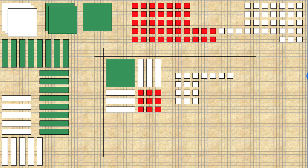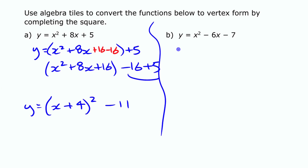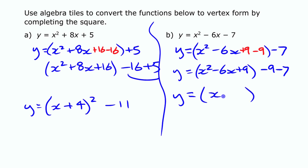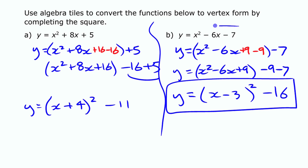Going back to write that down: we had x squared minus 6x and minus 7. We grouped the quadratic and linear terms, added 9 and minus 9. The first three parts — x squared, minus 6x, plus 9 — became our square, and the minus 9 and minus 7 were the extras. So this became x minus 3 squared minus 16, which is the equivalent vertex form for that quadratic.